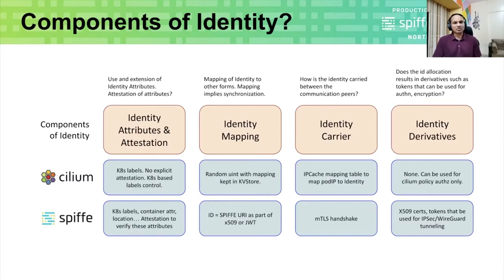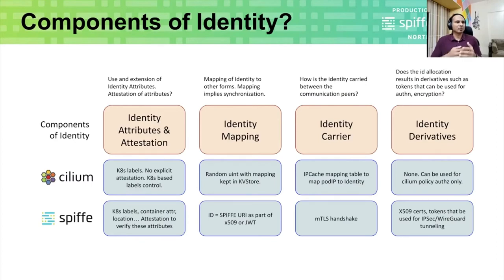In case of SPIFFE, it has a Kubernetes plugin which allows it to attest for Kubernetes labels and other aspects of Kubernetes. But that attestation logic can in turn be extended to handle other attributes such as container attributes — it could be container image name, location, or location of the cluster. There is an explicit attestation to verify these attributes.